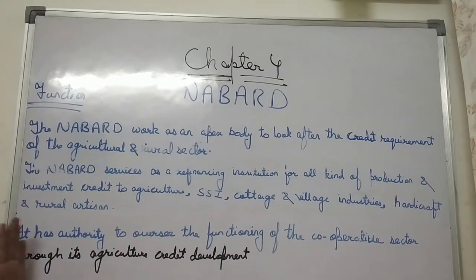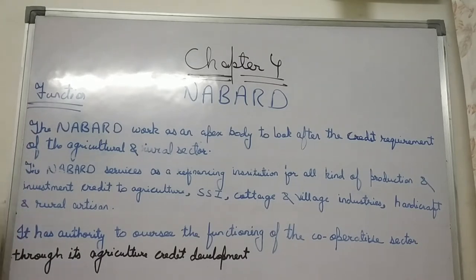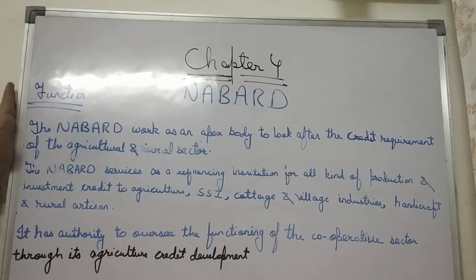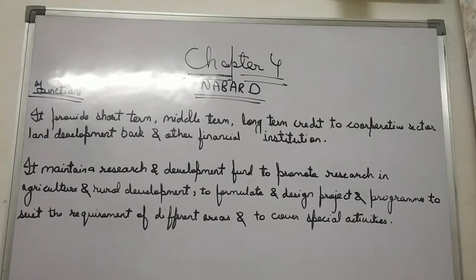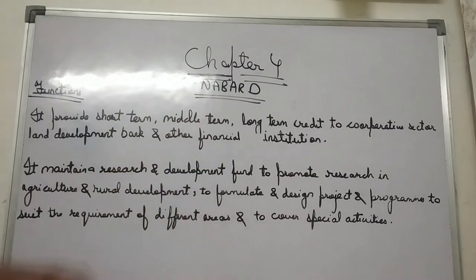NABARD has the authority to oversee the functioning of the cooperative sector through its agriculture credit requirements. When providing loans and refinancing for SSI, cottage or village industries, it has the authority to check whether these activities are properly functioning. It provides short-term, medium-term, and long-term credit to the cooperative sector, land development banks, and other financial institutions.